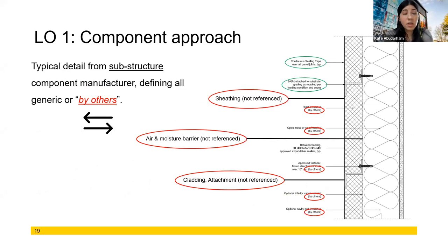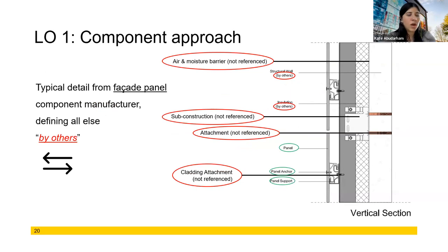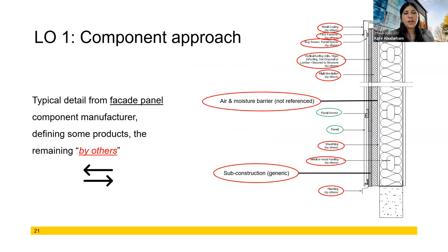This next detail is not even physically possible — it's a Z-girt going into bare insulation. There's no sheathing, no air and moisture barrier, no rain screen gap, no cladding. It's just Z-girts. Then we have another example that could be a really good system, but we don't know what it is — facade panel manufacturers take responsibility for the aesthetic of the building and that's about it. This is actually a closed joint rain screen system — a fiber cement panel that shiplaps into another with a clip in between.